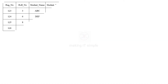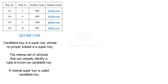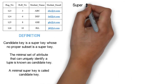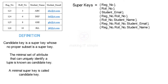In this example we have considered a student table. There are four columns: registration number, role number, student name, and student email. There are few records or tuples present in the table. As per the definition, candidate key is a super key whose no proper subset is a super key, so before we find candidate keys we need to find super keys present in the table. Following are the super keys present in this student table. To know how to find super keys, watch the video on super key.